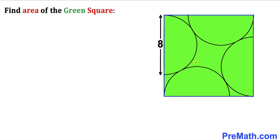In this video we have a green square that consists of four identical semicircles, as shown in this diagram, such that these semicircles are tangent to each other. Moreover, the diameter of each of these semicircles is eight units. Now we are going to calculate the area of this green square.